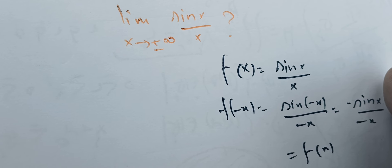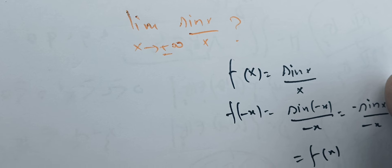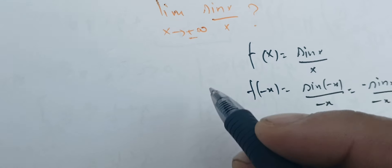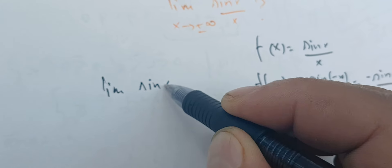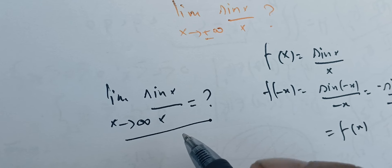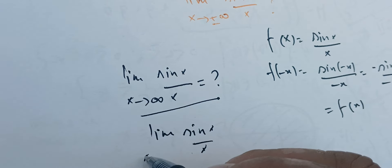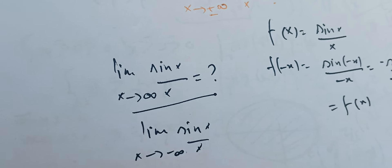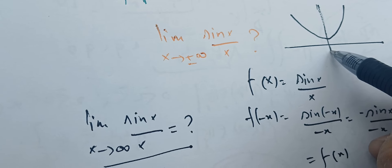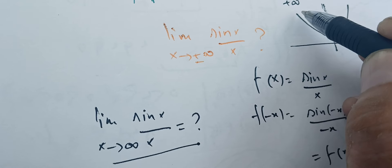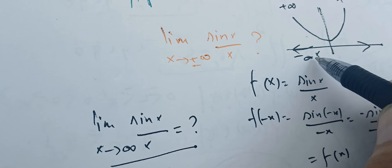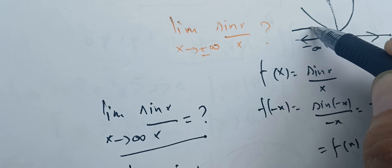That means our function is even. We can prove that the limit of sine of X over X as X goes to plus infinity, when we find it, the limit as X goes to minus infinity will be the same. Remember what we mean by even — it is symmetric with respect to the y-axis. If this goes to plus infinity on one side, it will go to plus infinity on the other side as X goes to minus infinity.